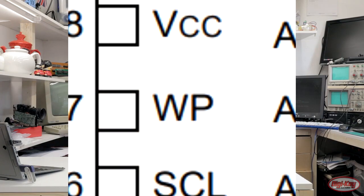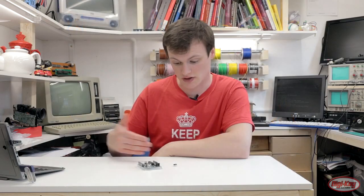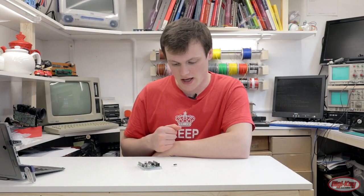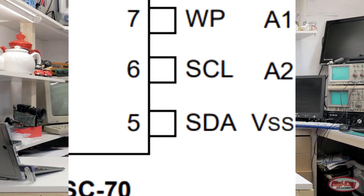Besides those three address pins, there's also a write protect pin, which is used to protect the data so you can't accidentally erase or write over it. You also have the power lines, and then you've got the I2C lines — SDA and SCL — which are your serial data and serial clock.